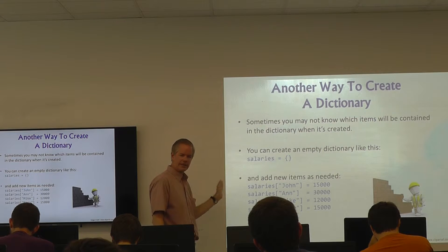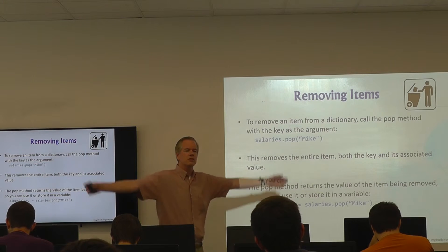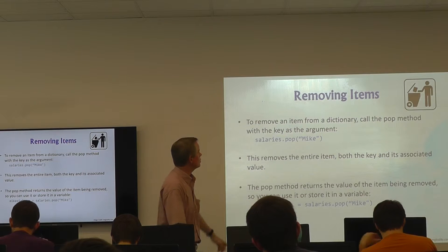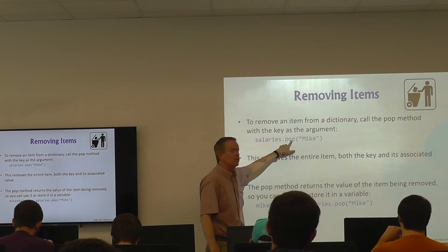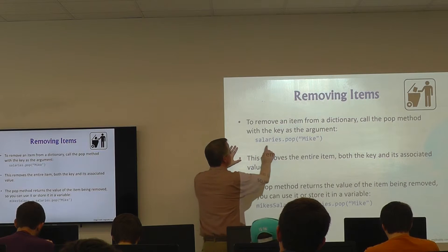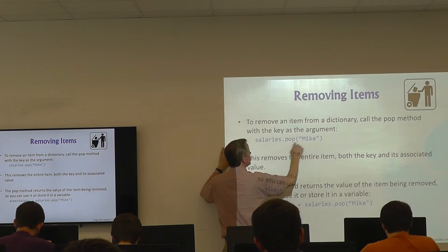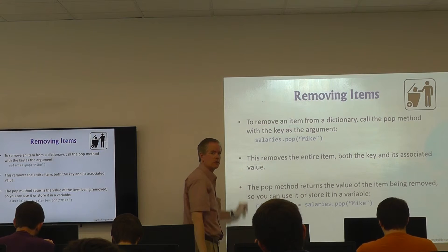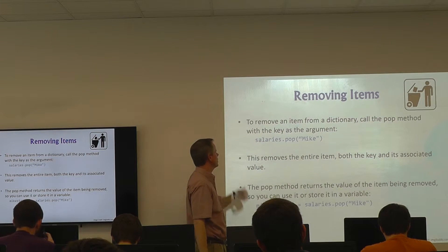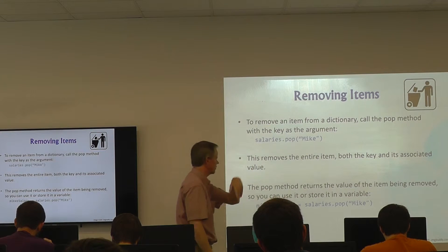The dictionary is not a good candidate for plus-equals. To remove items, we use the `.pop()` method. `salaries.pop('Mike')` will return Mike's salary and remove him from the dictionary. So if you want, you can capture it: `mike_salary = salaries.pop('Mike')`.